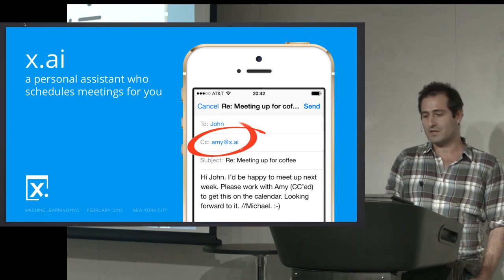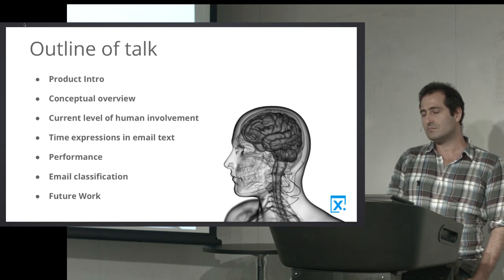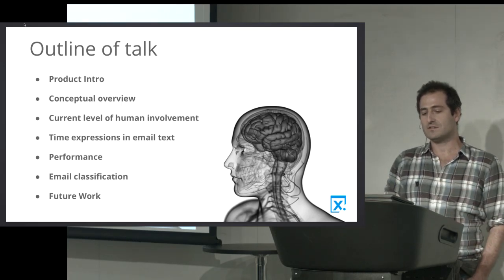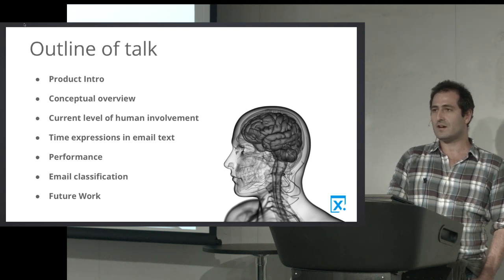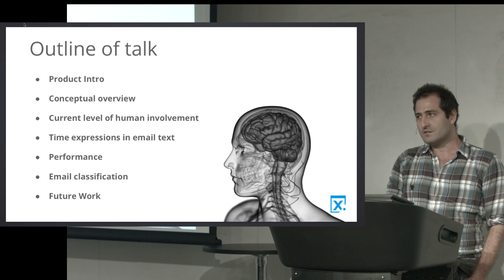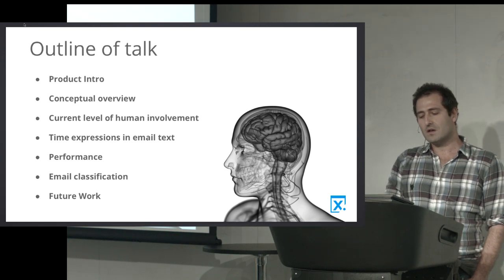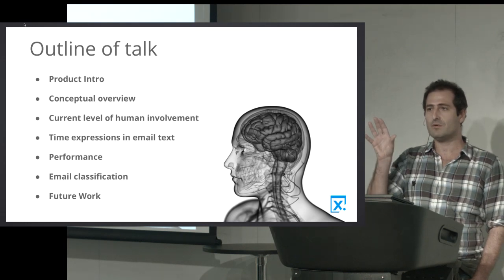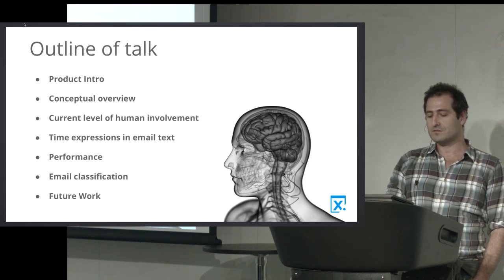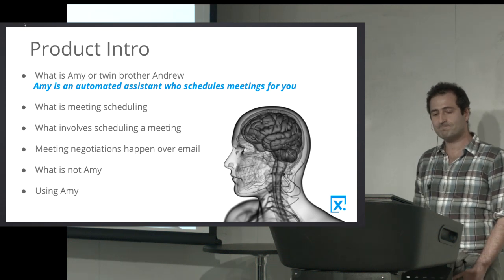So we're quite deep into the game. Here's the outline of this talk: first I'll give you an overview of the product, then an overview of the actual architecture. We don't have a fully automated system yet, so I'll explain the role of humans in our architecture. I'll talk about the different areas of data science in this project, and I'll focus on how we handle time expressions in text — a natural language processing domain. Then I'll show you the performance of our algorithms, say a few words about email classification, future work, and wrap it up.